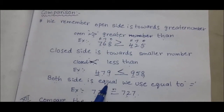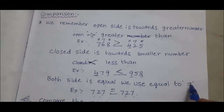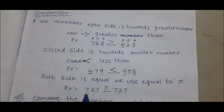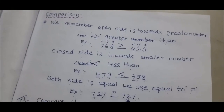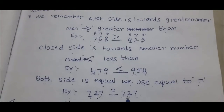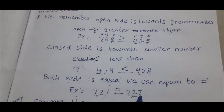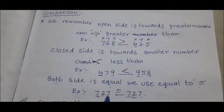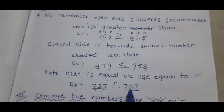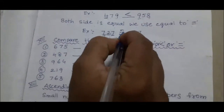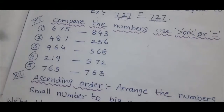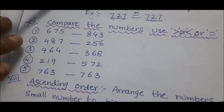Both sides equal — we use the equal-to symbol. Example: 727 and 727. We compare hundreds place: 7 and 7 — equal. We compare tens place: 2 and 2 — equal. We compare ones place: 7 and 7 — equal. So 727 = 727, we keep the equal symbol. Compare the numbers and use greater than, less than, or equal to. Complete these problems by seeing the above example.